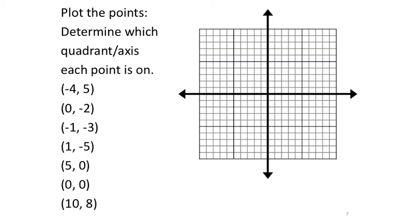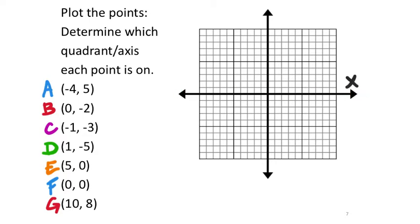Now we need to put ordered pairs on the graph and determine which quadrant or axis they're on. The x-axis is the horizontal number line, the y-axis is the vertical. Remember, it's always x values first, then y values second — always alphabetical: x then y.